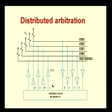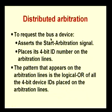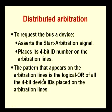There are input and output connections to these signals for each particular device. To request the bus, a device will assert the start arbitration signal — indicating it wants to start the arbitration process — and then place its 4-bit ID number on the arbitration lines. Every device has a unique ID number. There can be different devices simultaneously wanting access, and each will place its ID on the bus, so the pattern on the arbitration lines will be the logical OR of all the 4-bit device IDs placed on those lines.